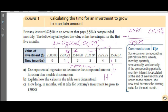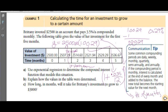The base is 1 plus 0.035 — the annual rate, 3.5% converted to a decimal — divided by 12 since it's monthly. That gives the interest rate per month.